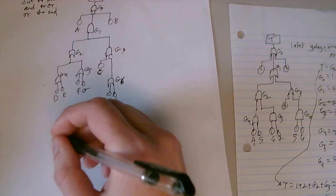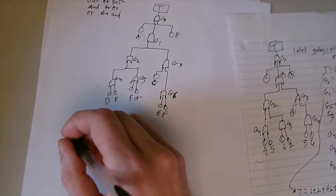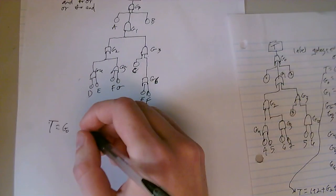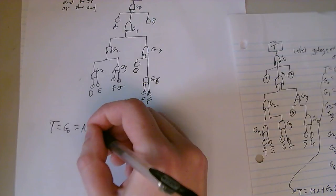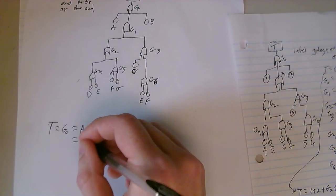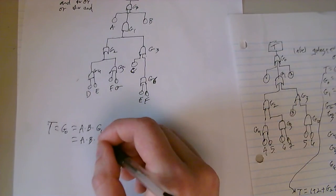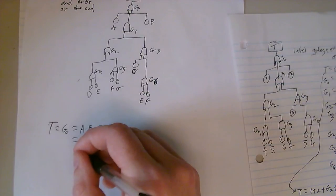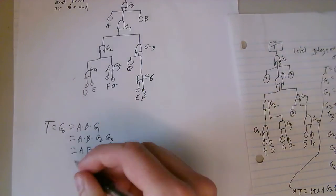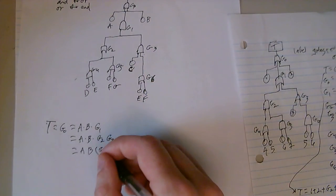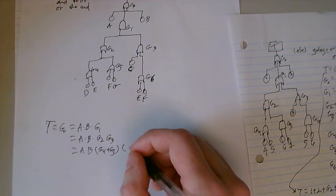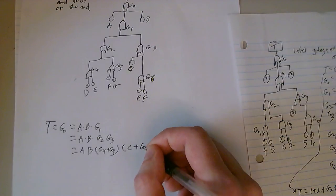So, we say, T equals G0. Well, that equals A times B times G1, which equals A times B times G2, G3, which equals A, B, G2, that's going to equal, it's an OR gate, so G4 plus G5, and G3. This is C plus G6.